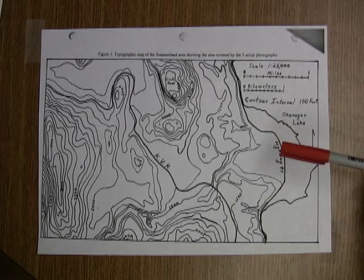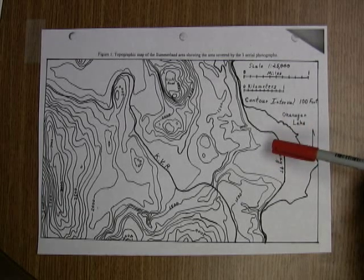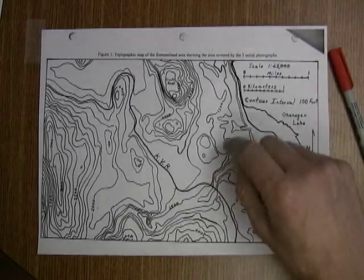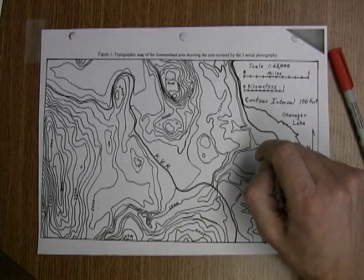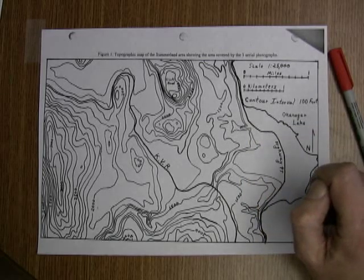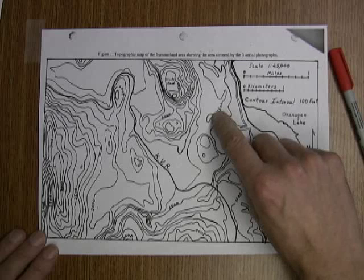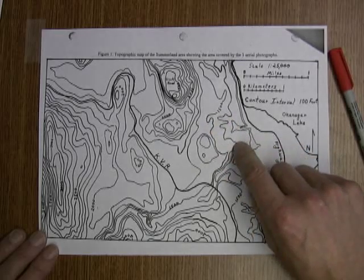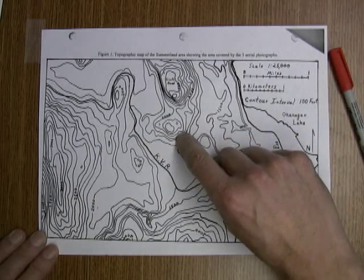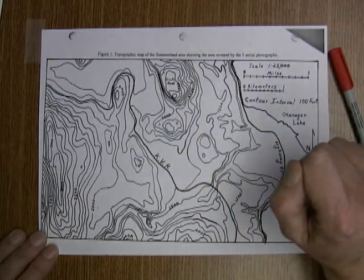What we have here is a topographic map. Now a topographic map has contours on it and the contours are lines joining up points of equal height. In this particular case they're in feet, in some cases they're in meters. So here we have a 1,500 foot contour line. As we move along here we've got a 2,000 foot contour line.